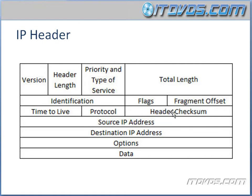Header checksum provides a cyclic redundancy check just for the header to make sure there wasn't any corruption. Source IP address is where the packet came from. Destination IP address is where the packet is going. Options can be used for network testing, debugging, security, and more — this is what gives the header its flexibility, and it's actually why we need to specify a header length, because the header size can vary. And finally, data is what's being encapsulated by this IP header, which is normally a segment.